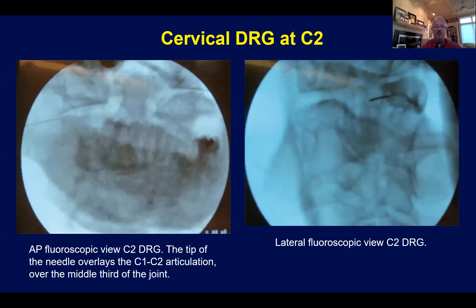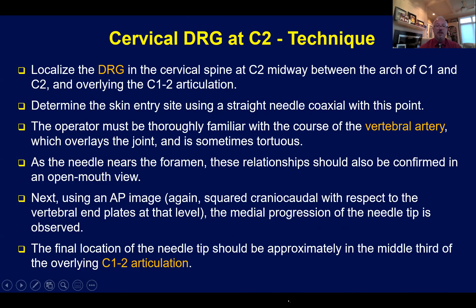The patient may also be in a lateral position, which is acceptable — I do some of these blocks in the lateral position. This is an AP fluoroscopic view of the C2 DRG with the needle tip overlying the C1-C2 articulation. This is a lateral fluoroscopic view of the C2 DRG approach. At C2, we localize the DRG midway between the arch of C1 and C2, overlying the C1-C2 articulation.